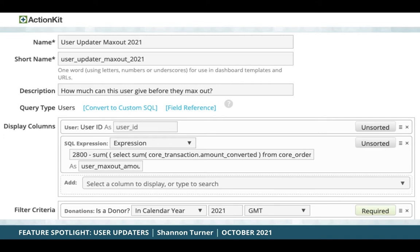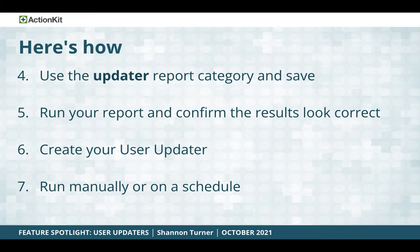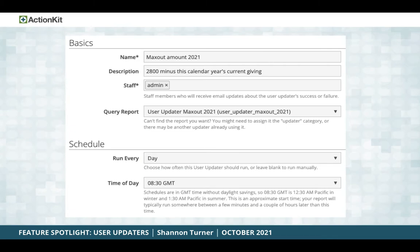I've also added filter criteria limiting results to donors who have given in calendar year 2021. Strictly speaking you don't need this, but I'm including it because if someone has no value for the field 'user_max_out_amount_2021,' I'll assume they haven't given at all. The last steps: make sure you use the updater report category, then save your report. When your report runs, verify the results look correct, since you will be updating users' custom fields based on them. Finally, create your user updater and run it.